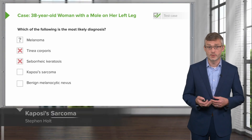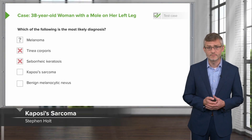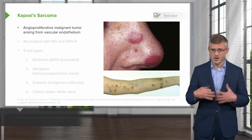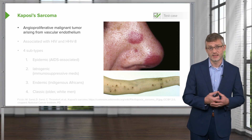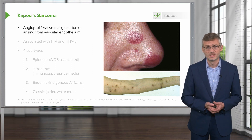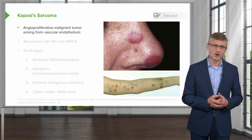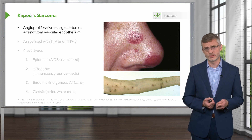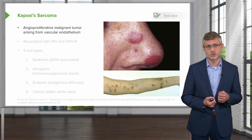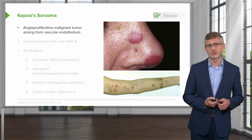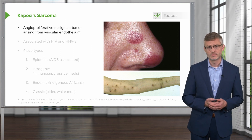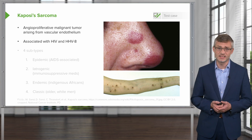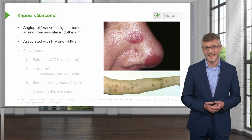Next up, we should talk about Kaposi's sarcoma. You may automatically think about HIV when you hear that diagnosis, but it turns out there are a couple different causes for this one. It is an angioproliferative malignant tumor arising from vascular endothelium, and it is very commonly associated with HIV and human herpes virus 8.